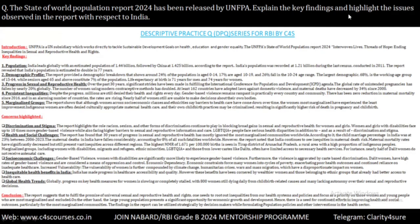The next point is about the demographic profile, that is the percentage of population in different age groups. In the age group of 0 to 14, it is 24 percent; between 10 to 19 years it is 17 percent; and the working age group population, that is 15 to 64, has more than two-thirds of the population. Senior citizens account for almost 7 percent. Life expectancy is 71 years for men and 74 years for women.